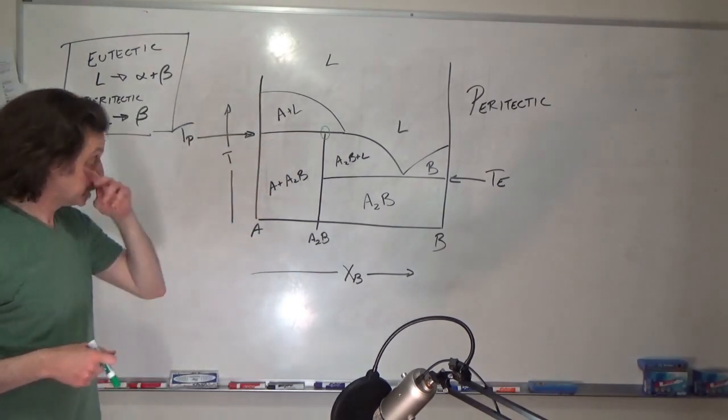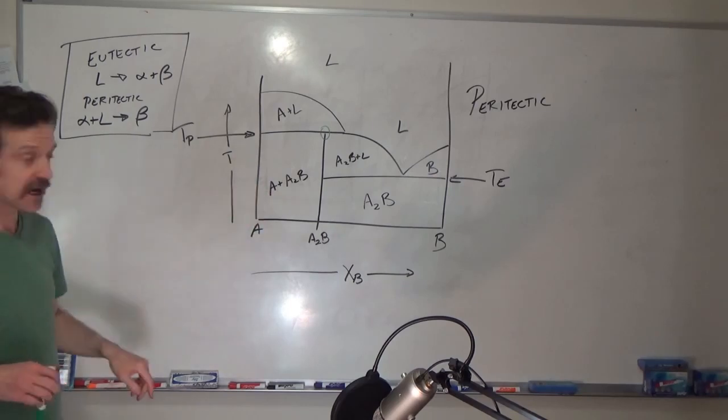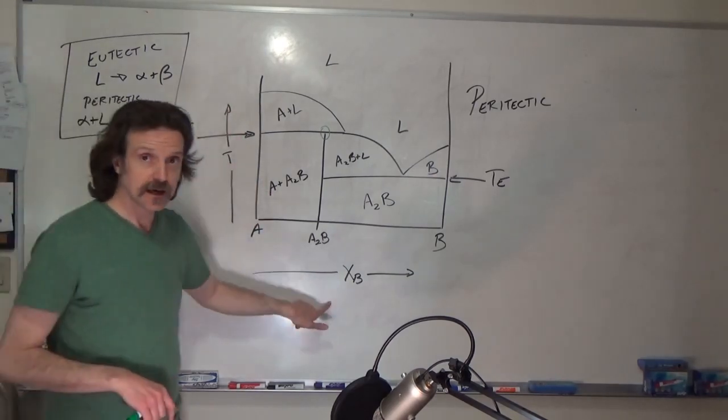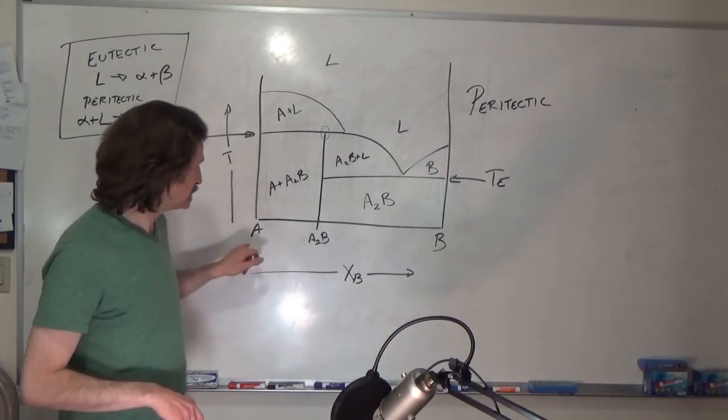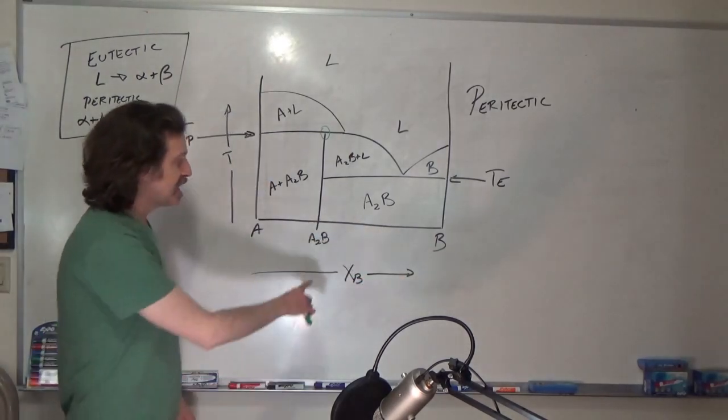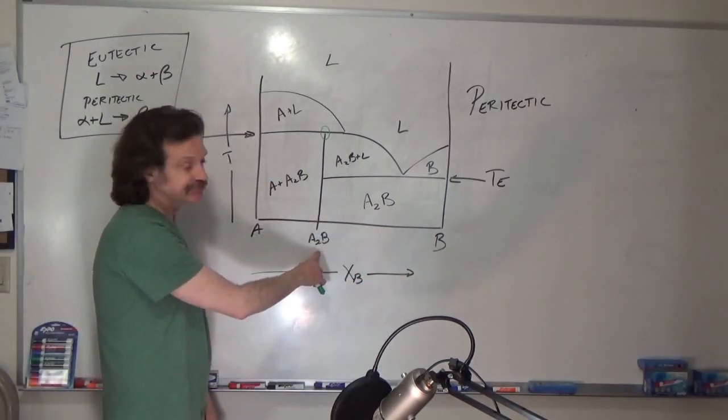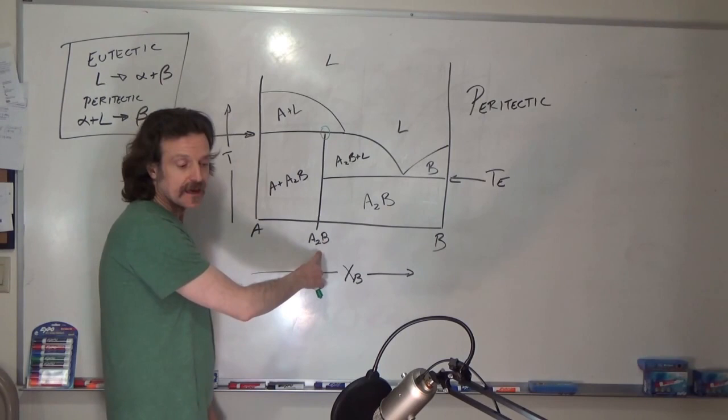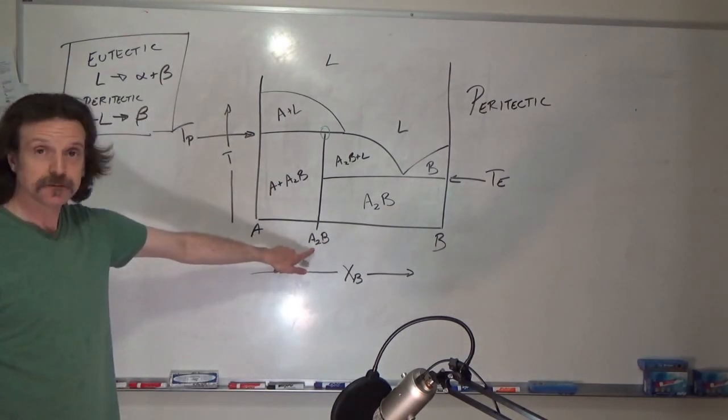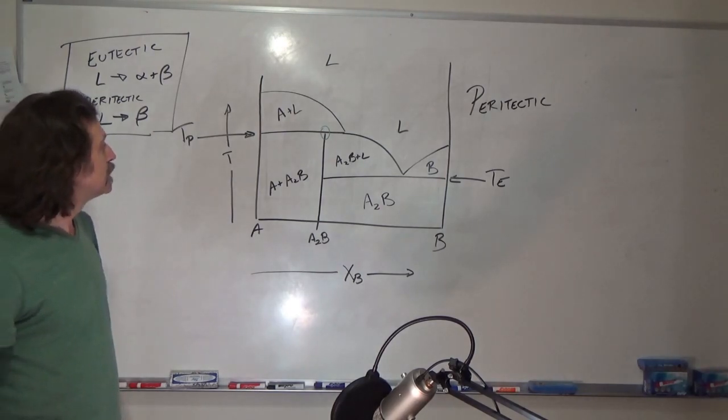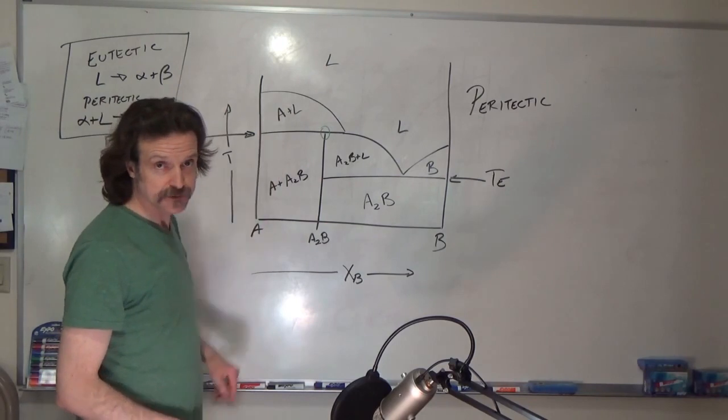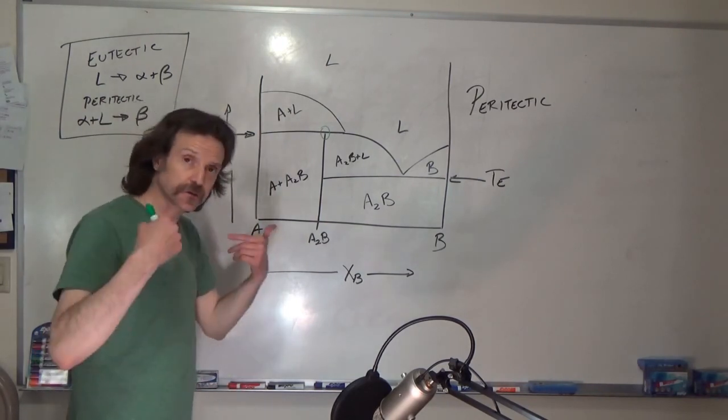But let's look at this. So what we have is we've got a line compound, and we're talking about temperature on the y-axis, composition on the X, and we have composition A, B, and then I made a stoichiometric compound between them. So this is A to B, and then I drew in the components in the phase diagram.